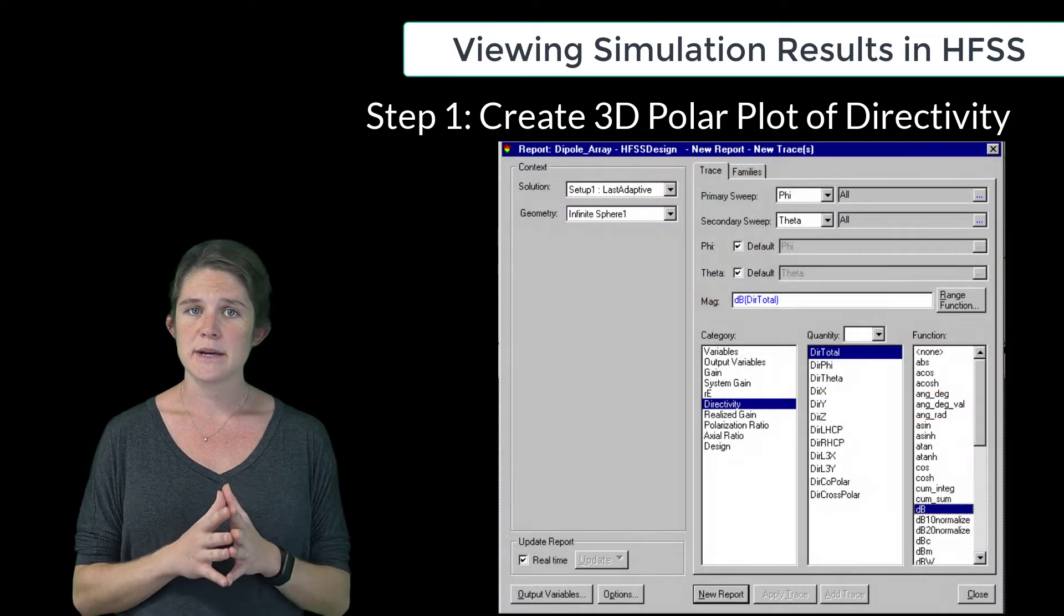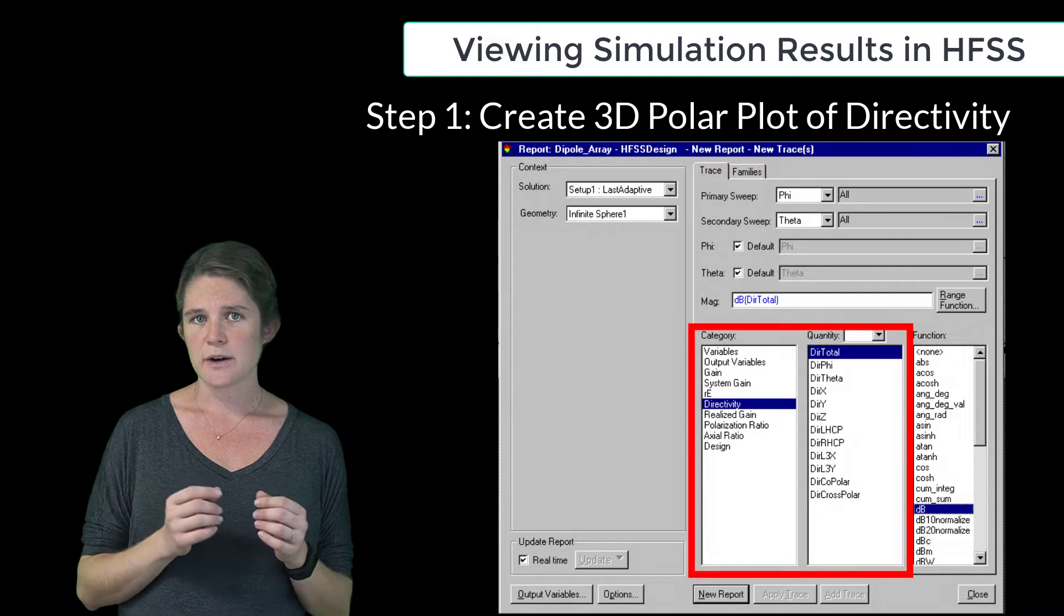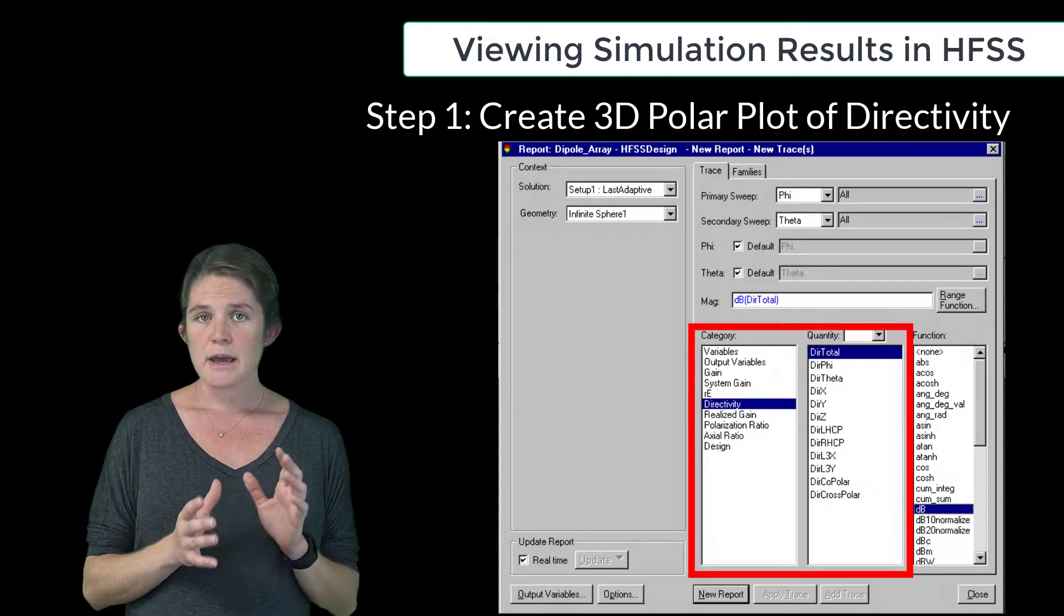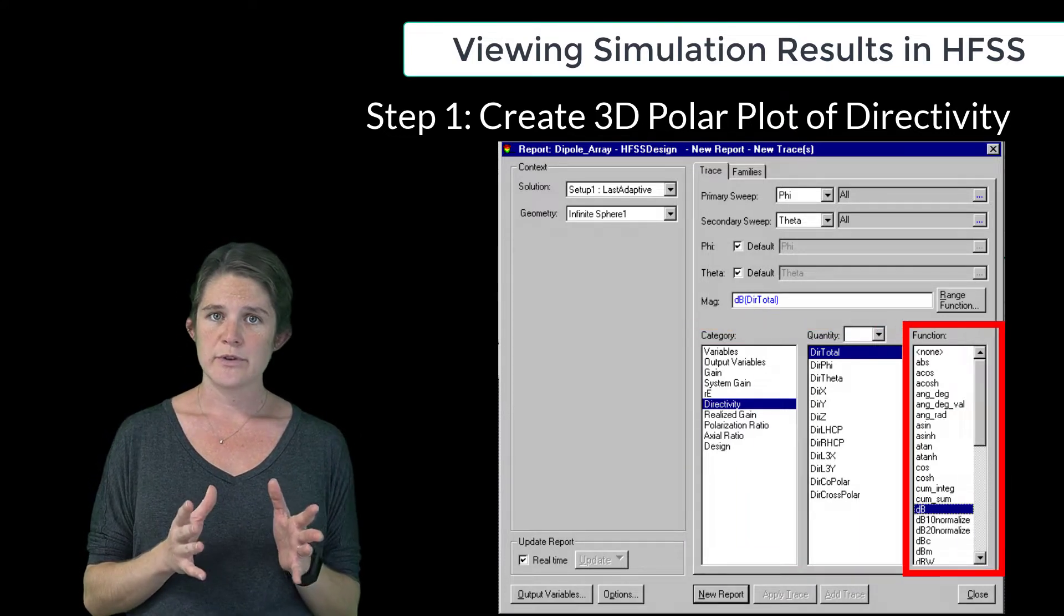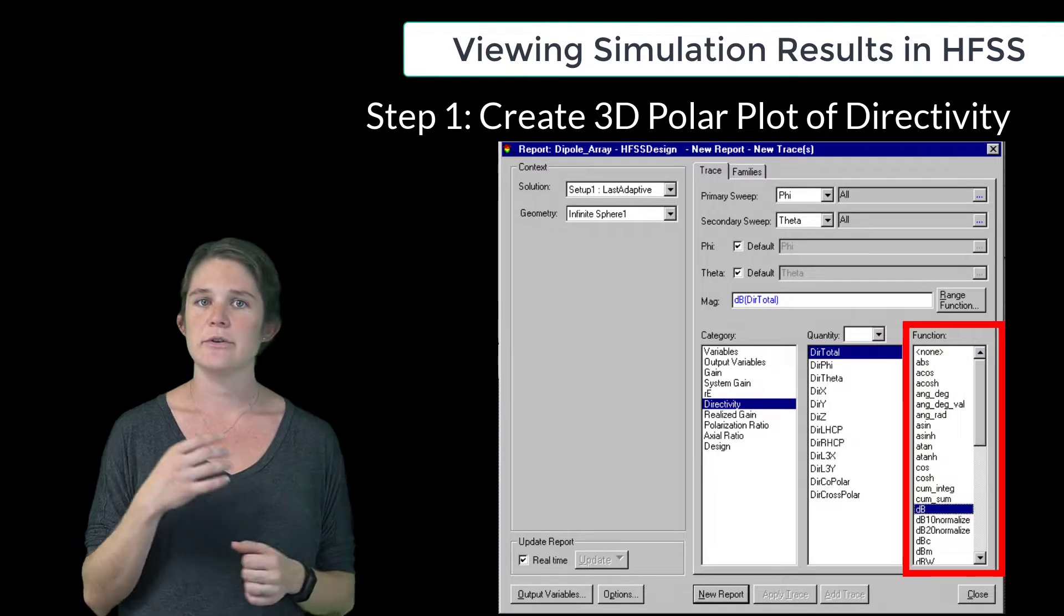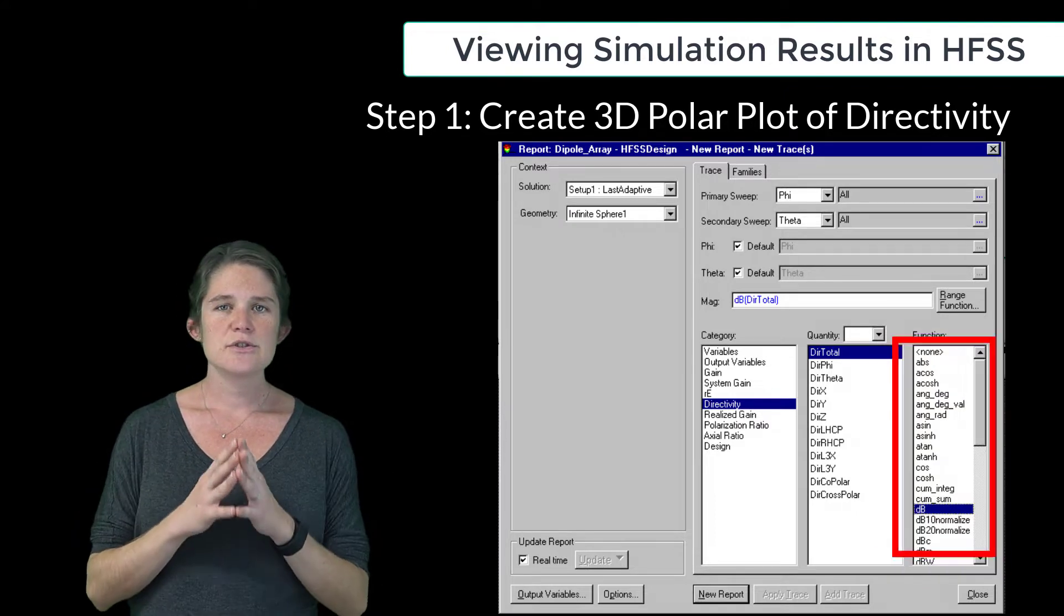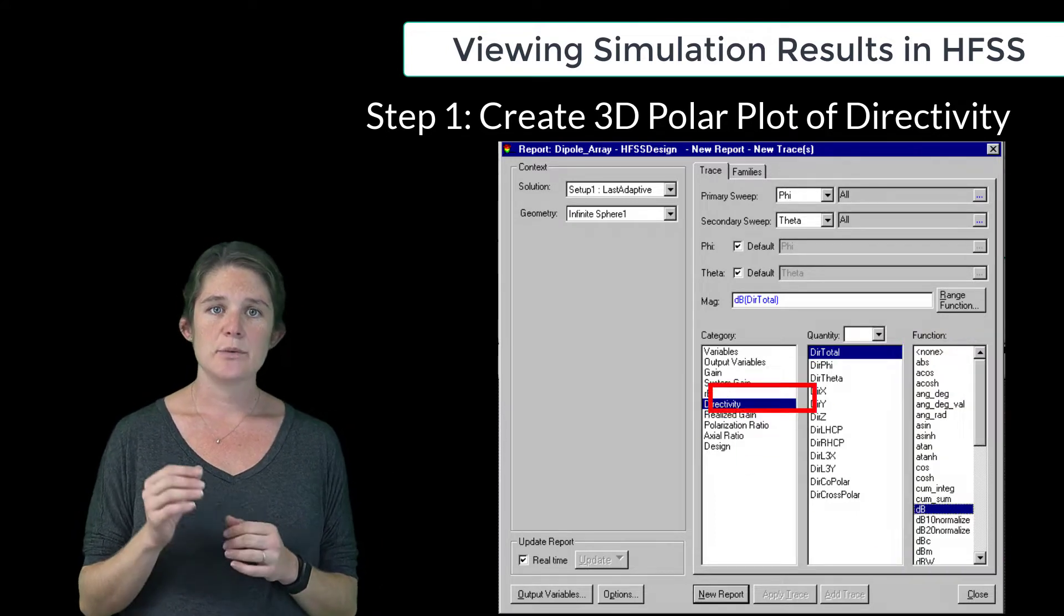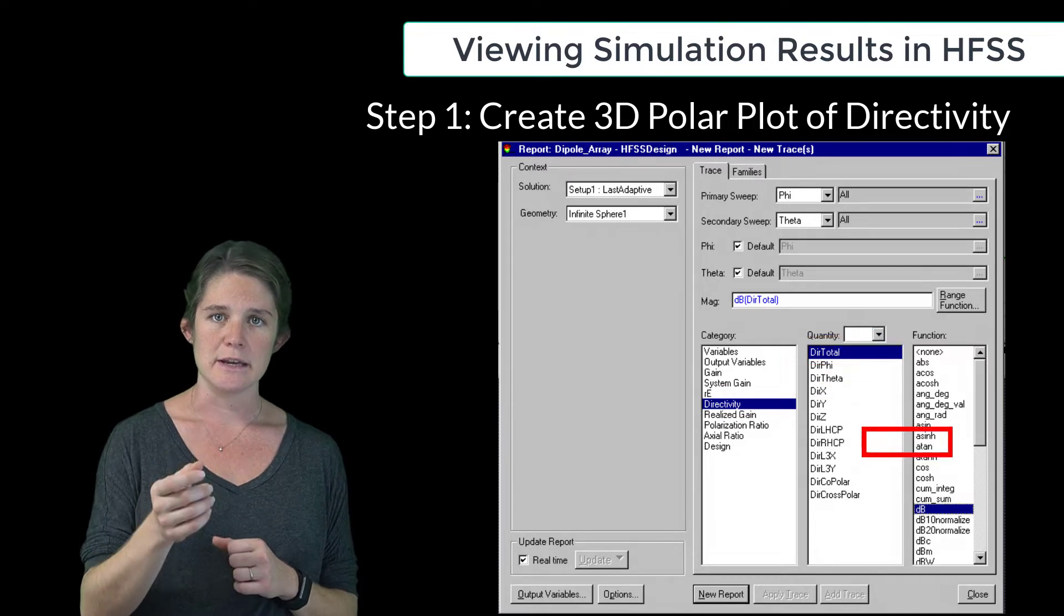In the pop-up dialog box that appears, you can choose which far-field parameter you want to plot, and also how it will be plotted, for instance, in linear magnitude or in dB. Let's choose to plot directivity, and we'll plot the total directivity in dB.